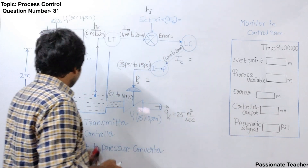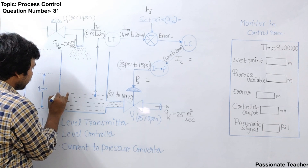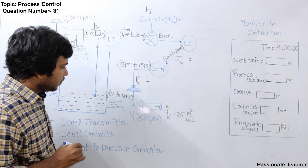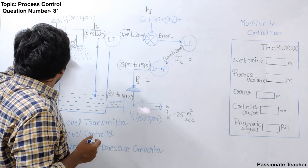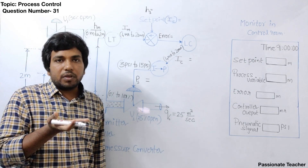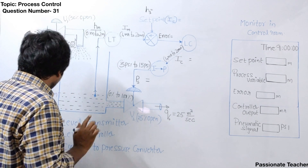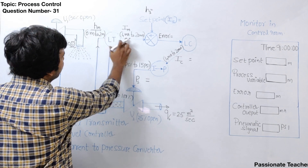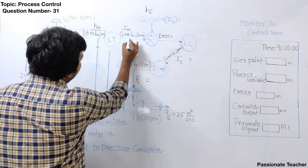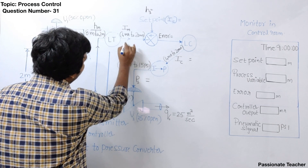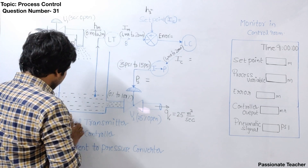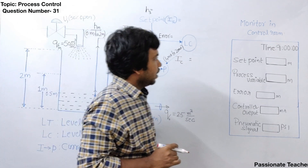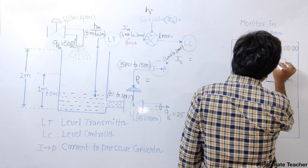Suppose the water level is initially at 0.5 meters, the input flow rate is 50 cubic meters per second, and the output flow rate is 25 cubic meters per second. Since the input flow rate is more than the output flow rate, the water level slowly increases in the tank. At present, the water level is 0.5 meters. From the linear relation, we can find the current coming from the transmitter is equal to 8 milliampere.